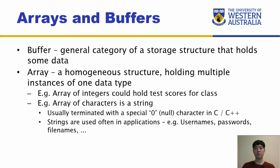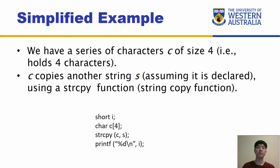Now we need to understand a bit more about arrays and buffers. A buffer is a general category of storage structure that holds some data, whereas an array typically refers to a homogeneous structure holding multiple instances of one data type — integers, floats, characters, and so forth. As a simple example, we have a series of characters C of size four, so this particular array will hold four characters.